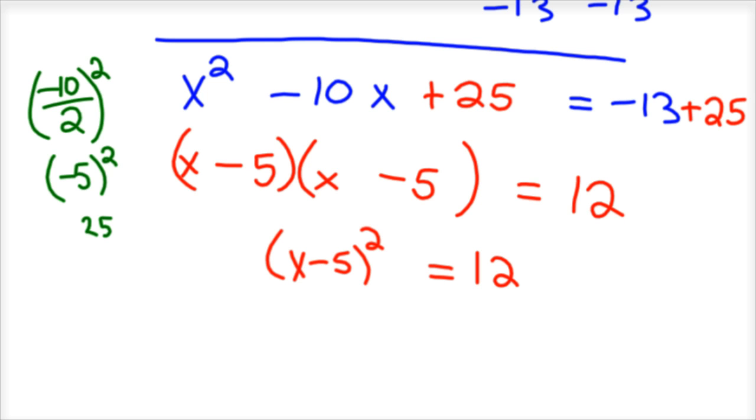And then, so your next step is, again, keep in mind, we're solving for x. So think about what you do next. Well, we want to get rid of the square. Well, how do you get rid of, and here's the square. How do you get rid of a square? Well, you take the square root of both sides of the equation.